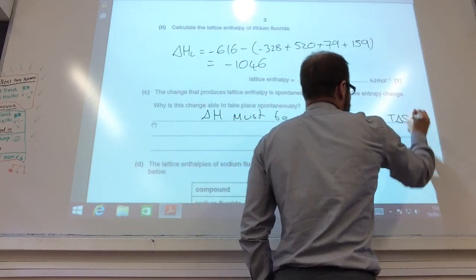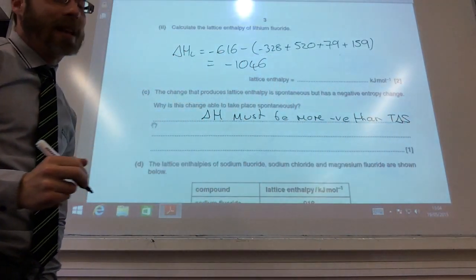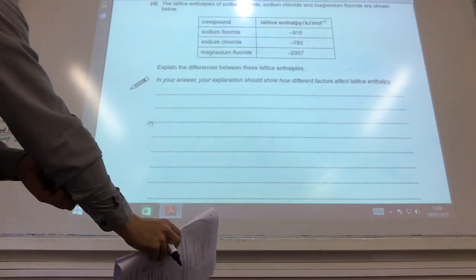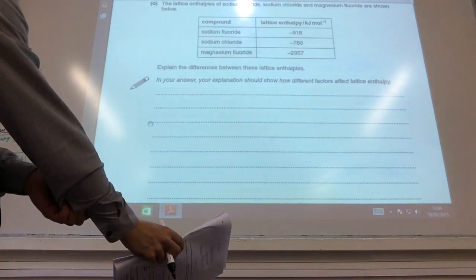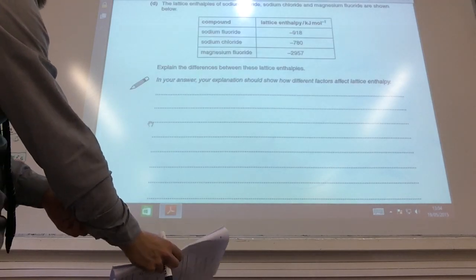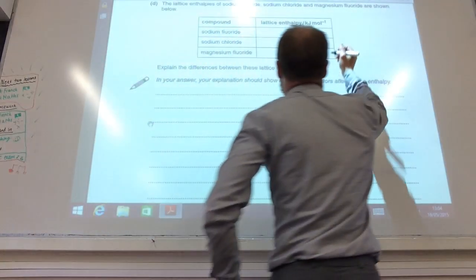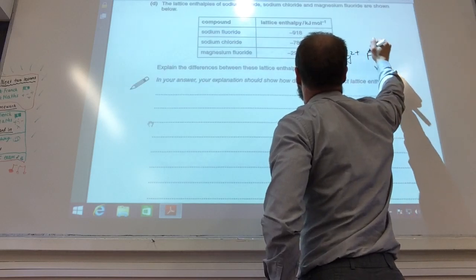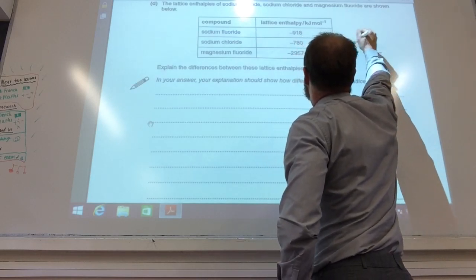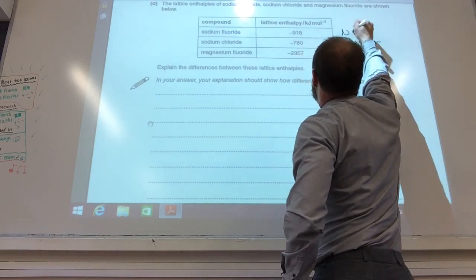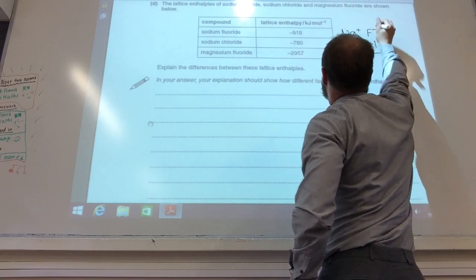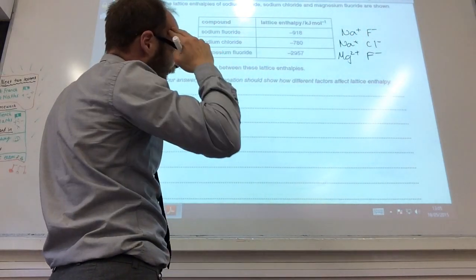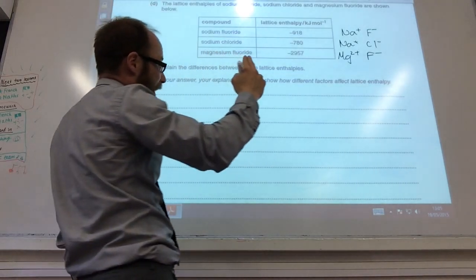Right, it's now asking me to compare some lattice enthalpies: sodium fluoride, magnesium fluoride, and sodium chloride. Okay, so let's have a think about the ions that are involved. That is going to have Mg2+ and F-, Na+ and Cl-, and Na+ and F-. So first of all, different factors affect lattice enthalpy where it's going to be ion size and ion charge.